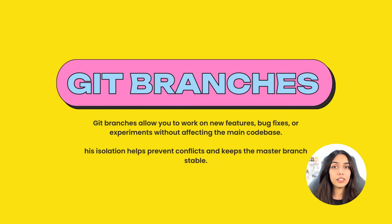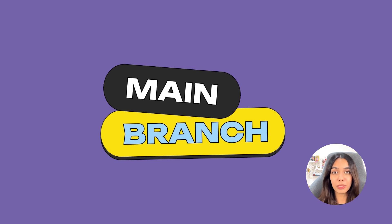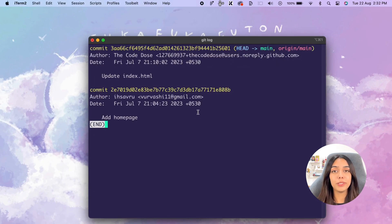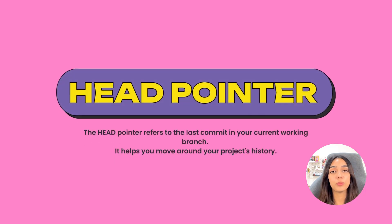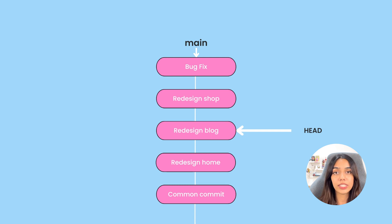Luckily, this is where branches come in. Branches help you create different versions of your project and work on them in isolation. If you haven't realized it yet, you've been working with a branch already — the main branch, also called the master branch. Go to your terminal and cd into your repository. Run the command git log. You'll notice that along with the most recent commit there is a HEAD pointer that points to the main branch.